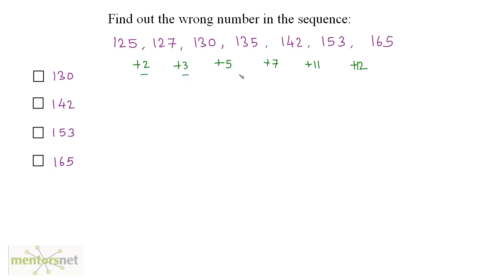Well, these numbers plus 2 plus 3 plus 5 plus 7 and plus 11 are all prime numbers. But this 12 is not a prime number. And by adding this non-prime number to 153, you are getting this number 165. This number should have been a prime number. But in this case, it is not. Hence, 165 is the wrong number in the sequence.